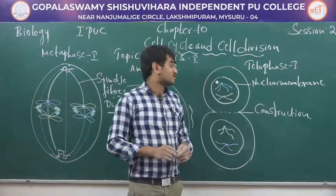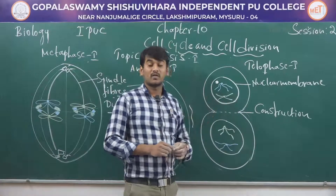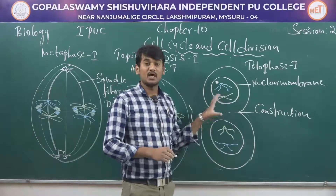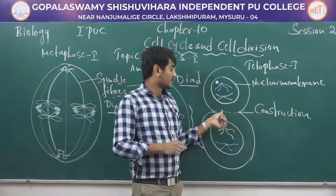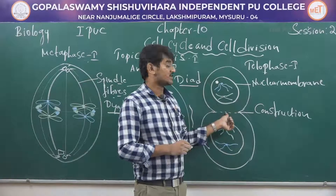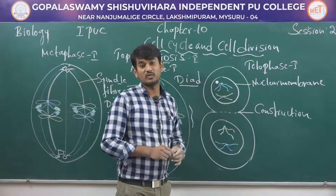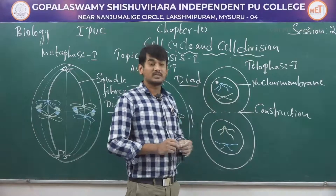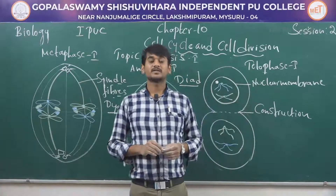In telophase I, the nuclear membrane and nucleus reappear, which leads to the formation of two haploid nuclei. Constriction takes place in the middle of the cytoplasm, which helps to divide the cell into two equal daughter cells.